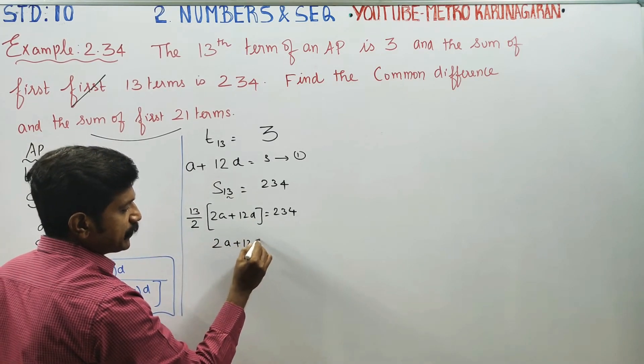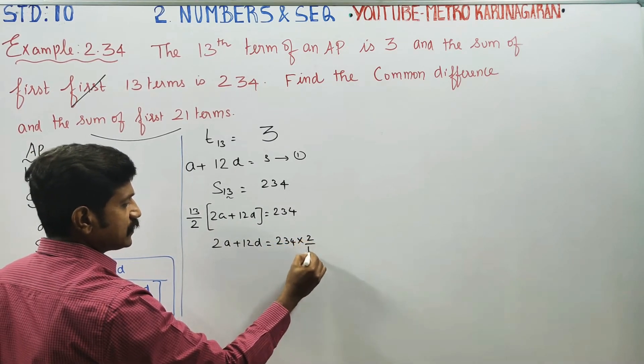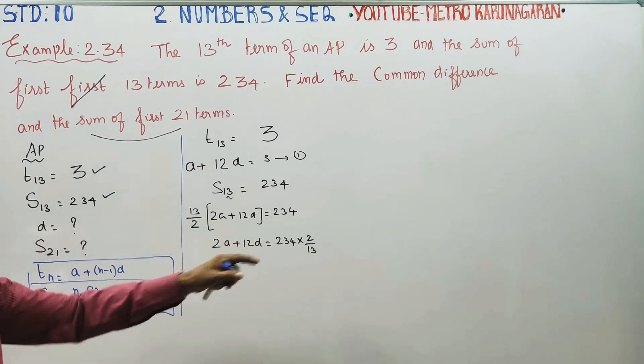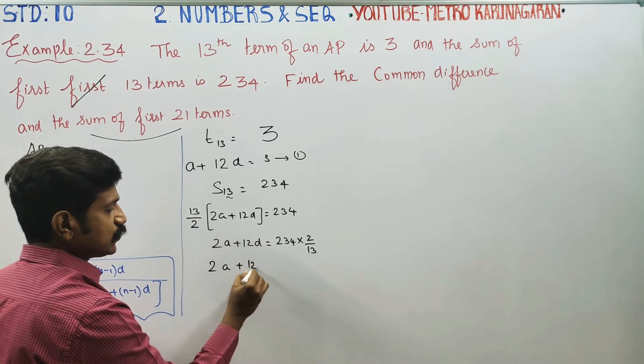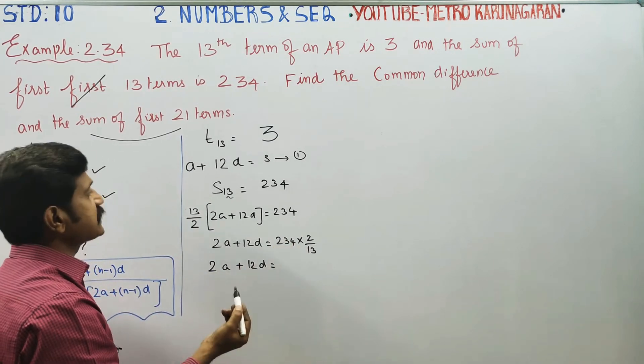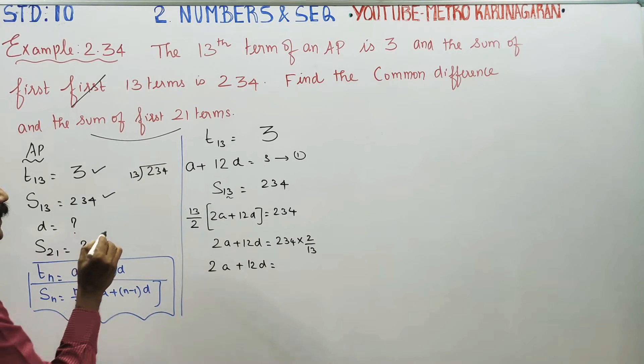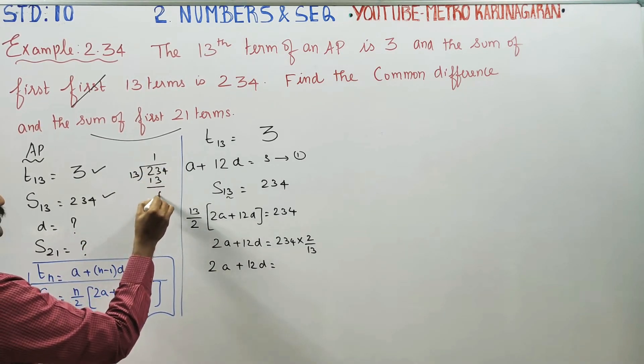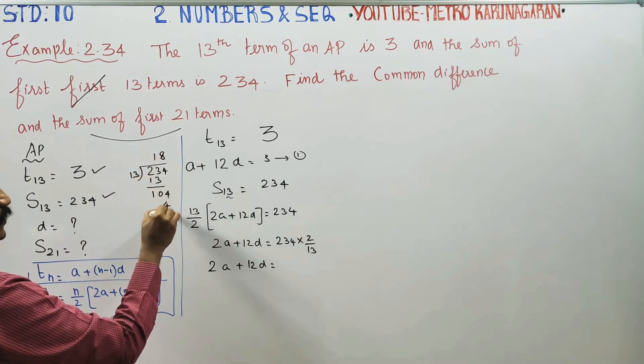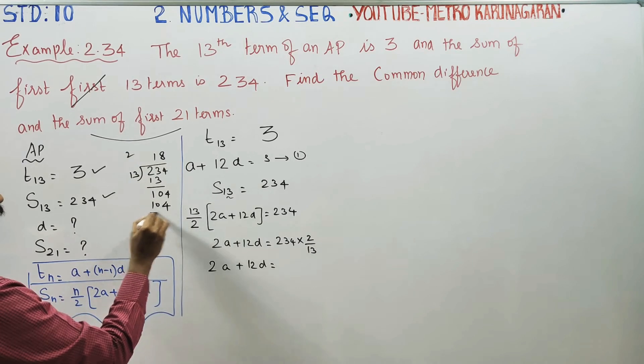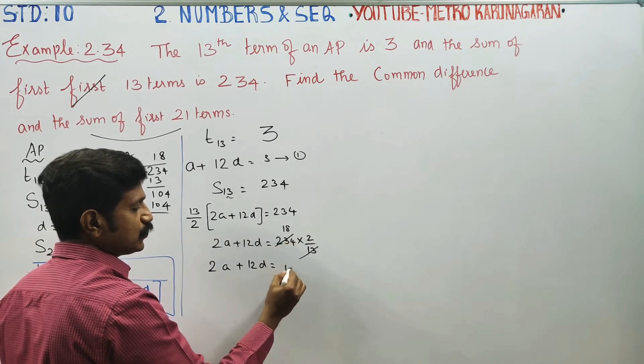Multiply 234 by 2 over 13. Cancel the 13. 234 divided by 13: 13 times 18 equals 234. So we get 18 times 2.